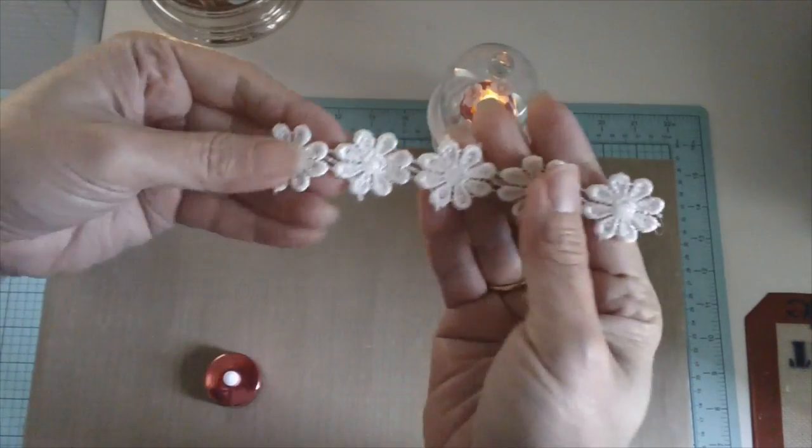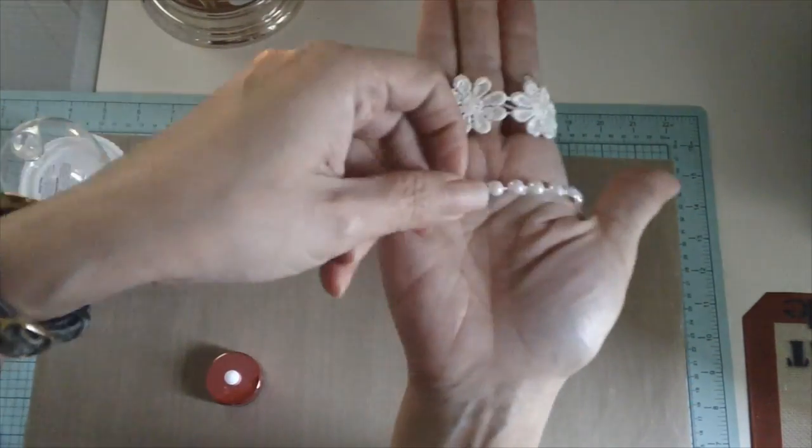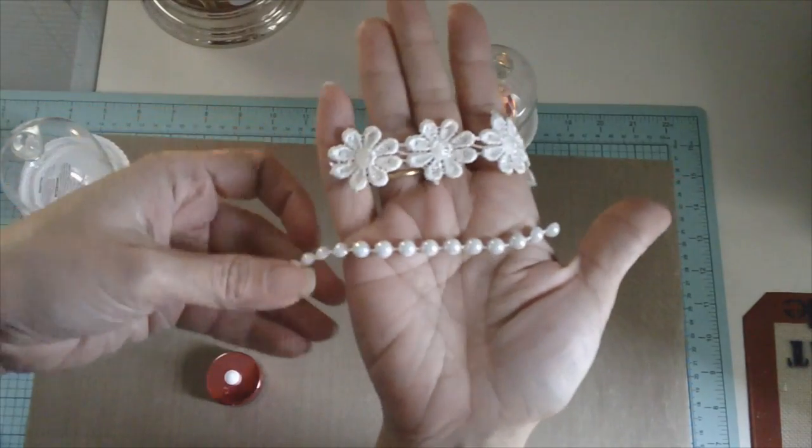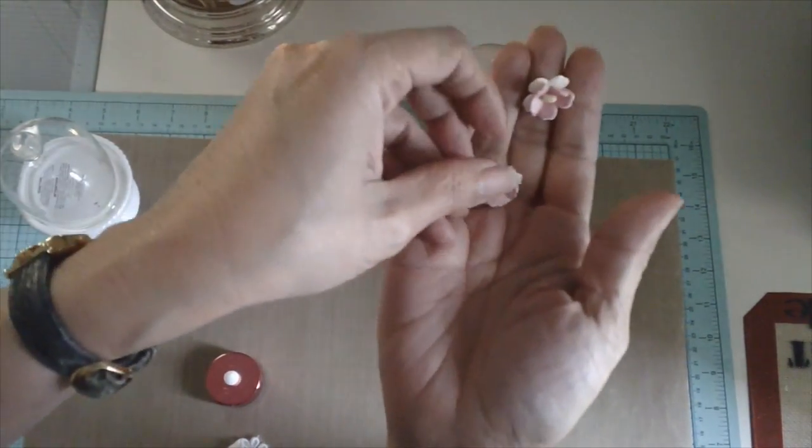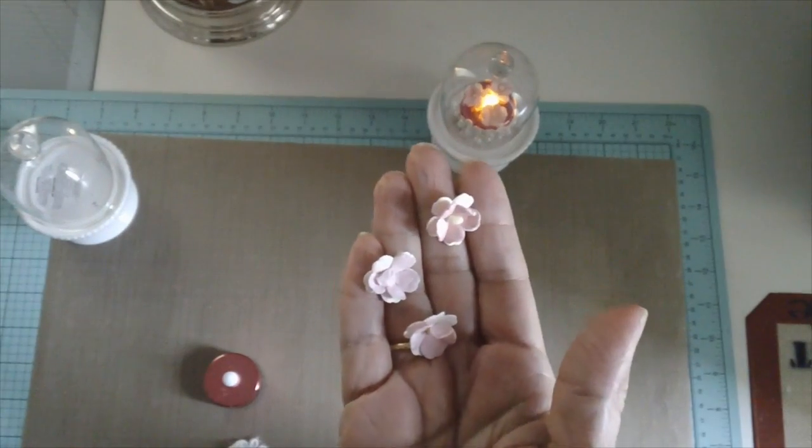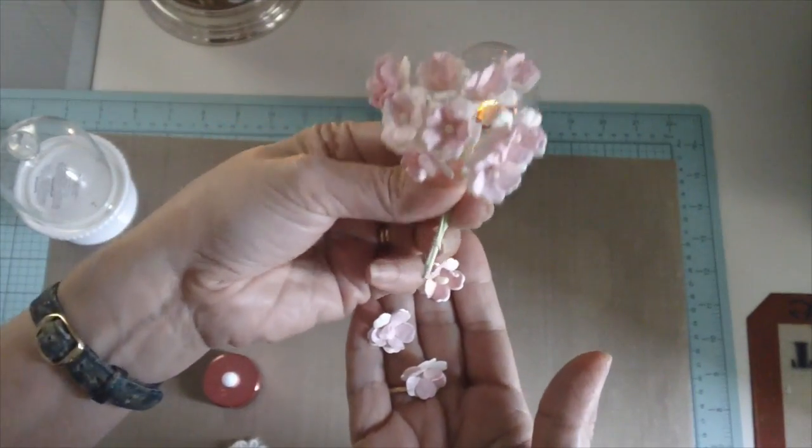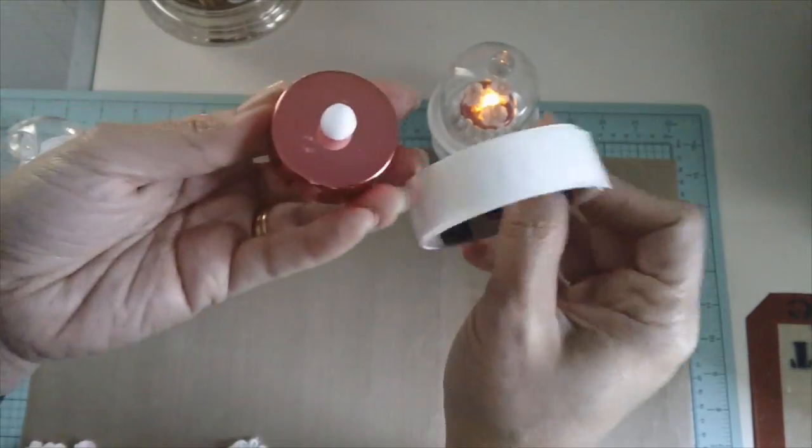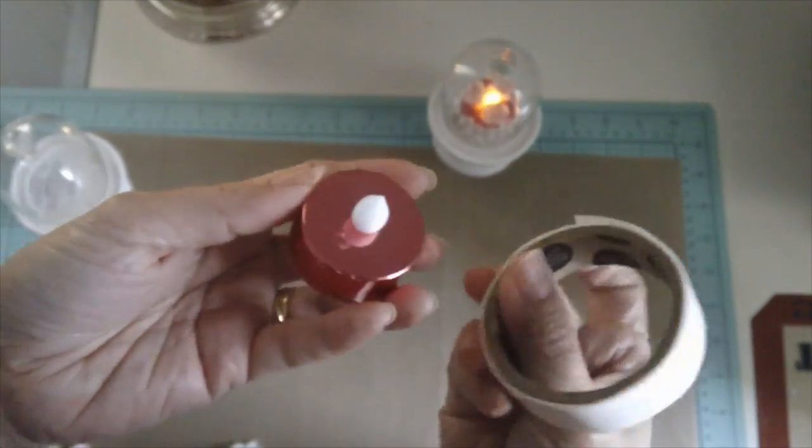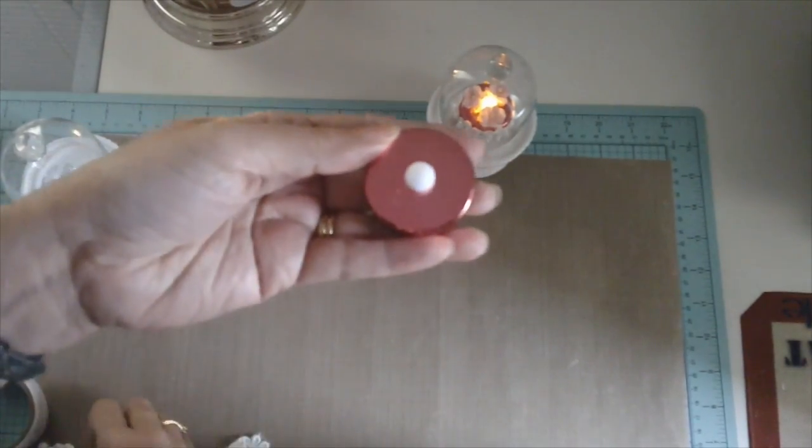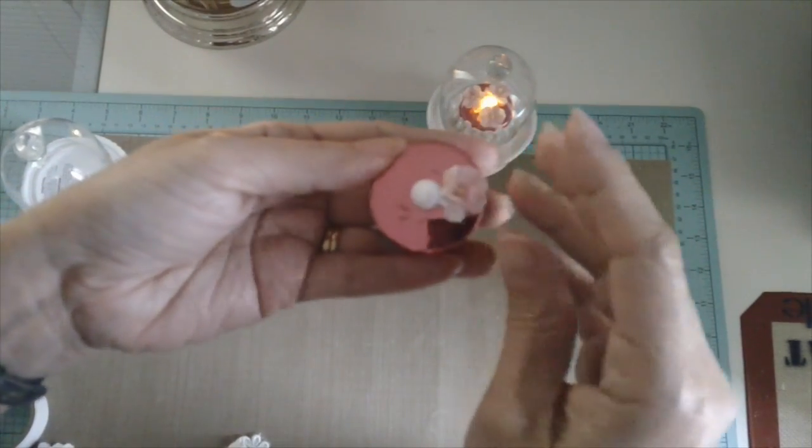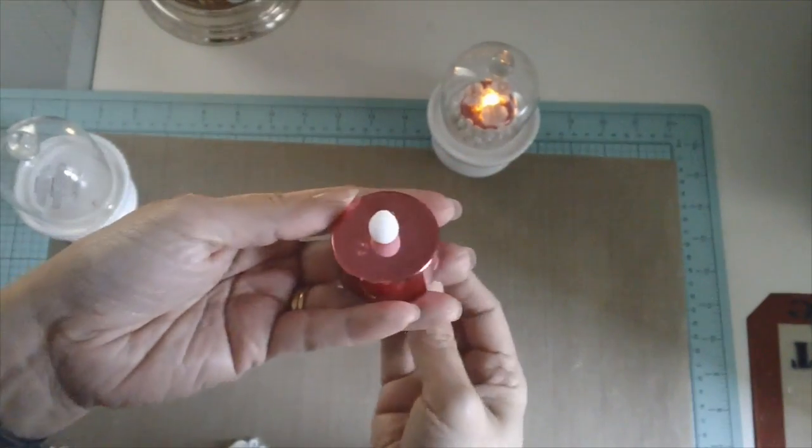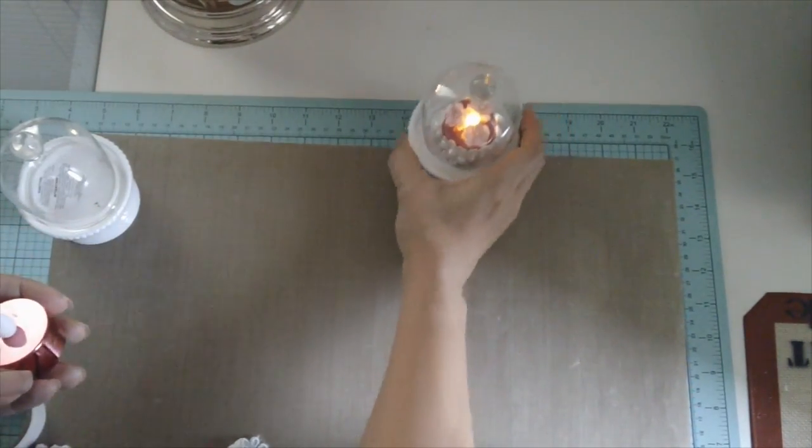We will need our glue gun for this of course. So I already pre-cut my lace and my flat back pearl, and of course I have cut the flowers. I got these flowers from Wild Orchid Crafts and it comes in a bundle like this. And since I don't really want to glue anything on top of the tea light, we will just use mini glue dots from Stampin' Up to attach the little flowers on top so I can reuse it for something else. I'm just gonna put that there because that's our inspiration.